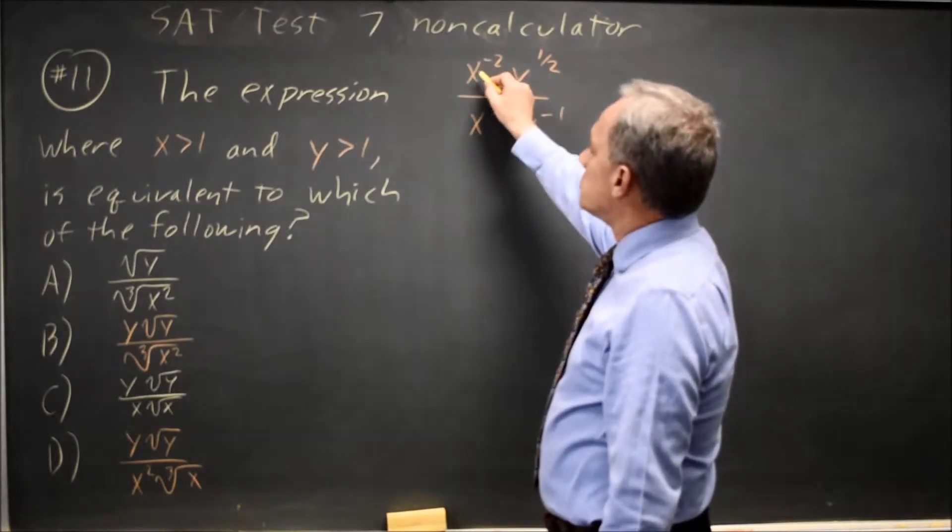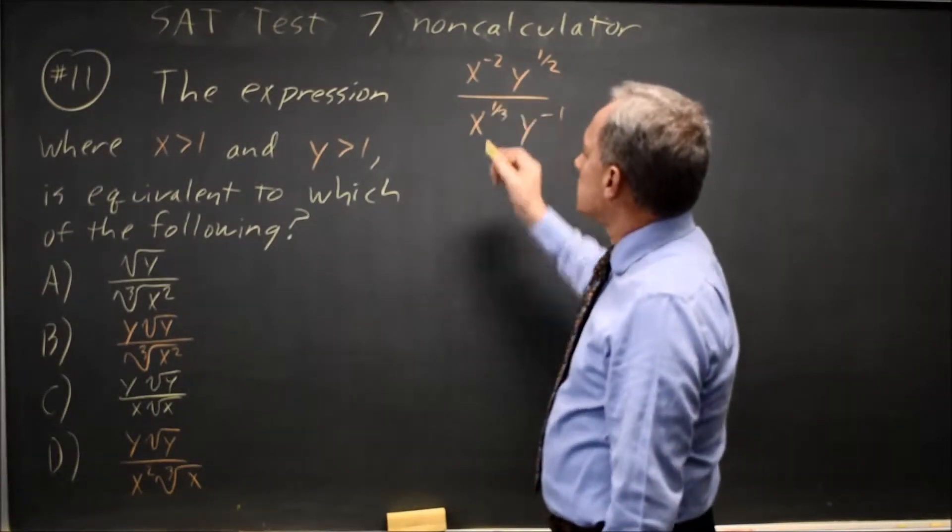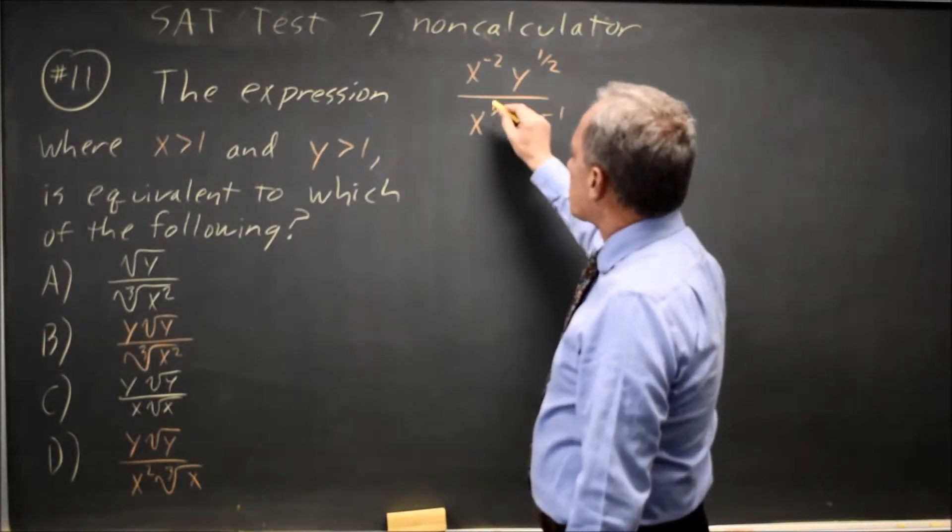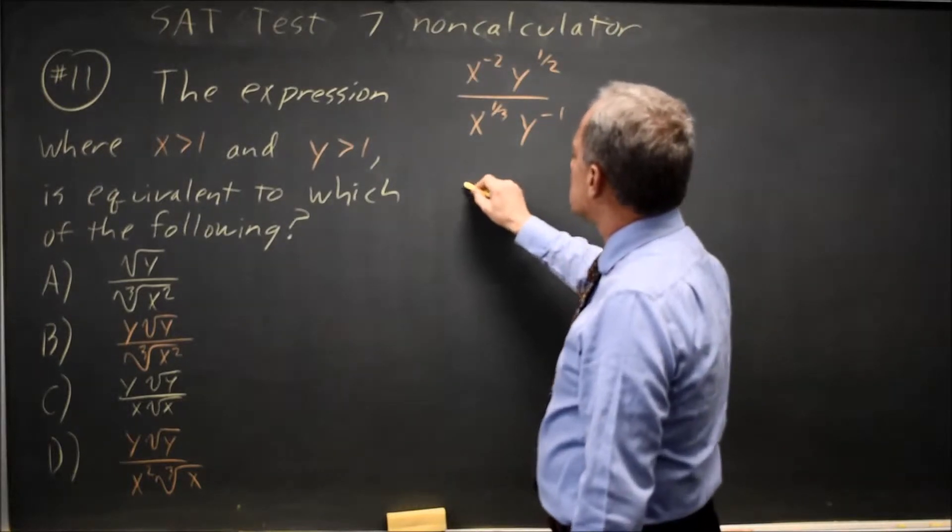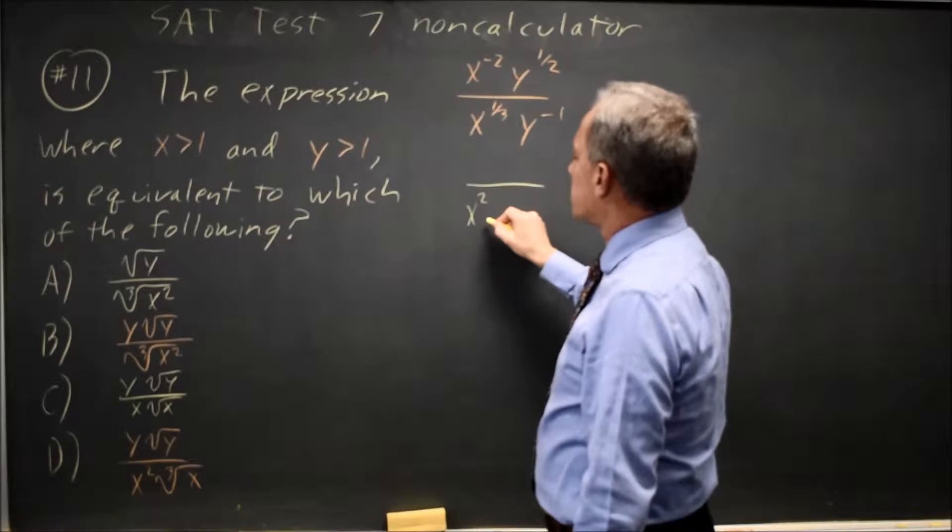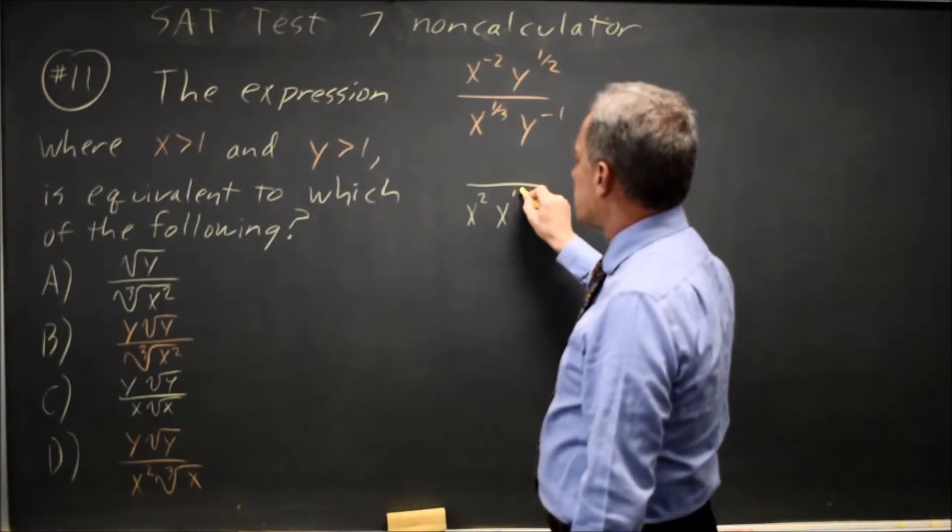The first thing I'm going to do is rewrite so I don't have any negative exponents because none of my answer choices have negatives. And I'm going to work just with the x. x to the negative 2 in the numerator is the same as x squared in the denominator and I still have that x to the 1 third.